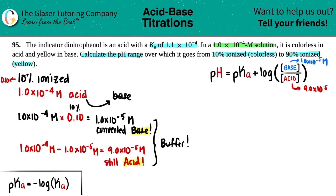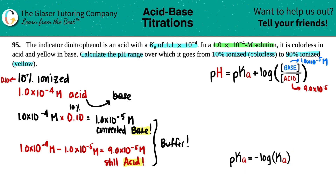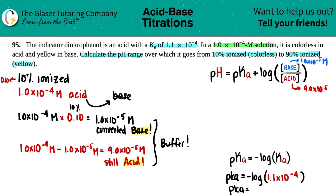Now all I have to do is find the pKa. We know this formula: pKa equals negative log of the Ka. The Ka was 1.1 times 10 to the negative fourth. So let's find out what that pKa value is. Negative log of 1.1 times 10 to the negative fourth gives us 3.959. That's going to be the number here.